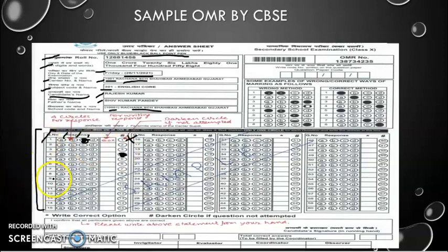If I am attempting question number six and I wrongly darkened circle A, but later I realized the answer is not A but C, there is an extra rectangular box given to us for the correct answer. Write your C very clearly there, and the computer will read this C — you will not lose the mark. The incorrectly darkened circle will not be read; only the answer written in the extra box will be given importance. So if you realize you have marked the wrong answer, write the correct answer in that box and the computer will only read C, not A.